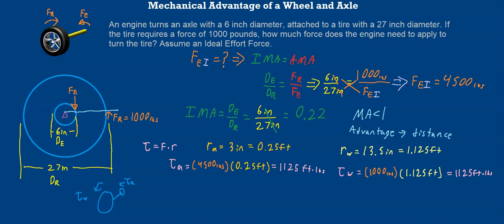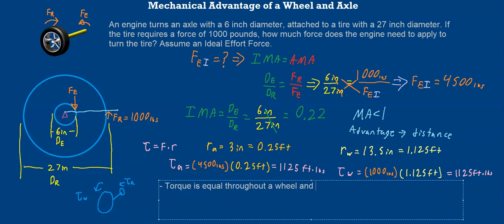Let's write this out for our notes. Our torque is equal throughout a wheel and axle. All the way up and down our drive shaft, the torque is going to be consistent if they're attached to the same shaft or axle.